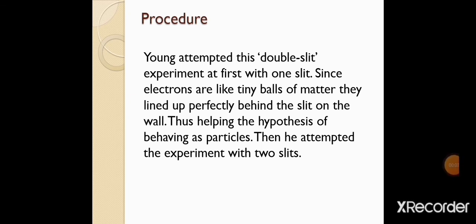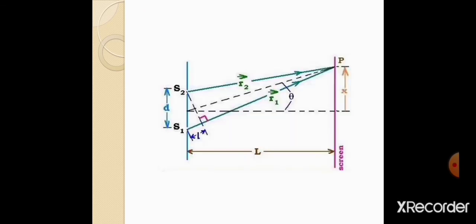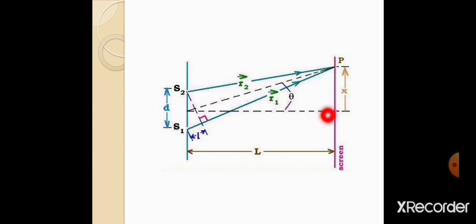Iske baad is experiment ko double slit ke saath perform kiya gaya jismein humne do slits li thin, isliye is experiment ko Double Slit Experiment ya Double Slit Interference bhi bola jata hai. Is figure ke andar aap dekh sakte hain ke yahaan pe humne do openings li hain — that is S1 and S2. Ab kya hoga: agar hum central point ke upar check karna chahenge to yahaan maximum region ayega ya minimum region, yaani dark region aa raha hai ya bright region. Agar path difference zero hoga to central point ke upar bright fringe banegi. Kisi bhi point P ke upar dark fringe banegi ya bright fringe — is ke liye hum interference ka phenomenon find out karte hain.